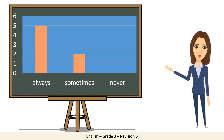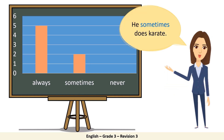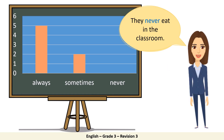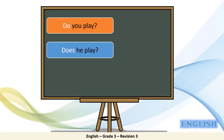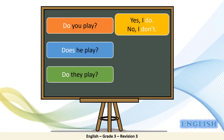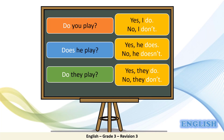In present simple sentences we can use adverbs of frequency: always, sometimes, or never. I always go to bed early. He sometimes does karate. They never eat in the classroom. For asking in present simple, we use do or does: Do you play? Does he play? Do they play? And we answer yes or no — Yes, I do / No, I don't. Yes, he does / No, he doesn't. Yes, they do / No, they don't.